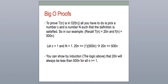Now let's talk about Big O proofs. Let's start with something simple. To prove t of n is in Big O of f of n, all you have to do is pick a number c and a number capital N such that the definition is satisfied. In our example, capital T of n is equal to 20n and f of n is equal to 500n. Let's let c equal 1 and capital N equal 1. Then we get: 20n is less than or equal to 1 times 500n. This follows that 20n is less than or equal to 500n. You can show by induction or logic that 20n will always be less than 500n for all n greater than or equal to 1. That satisfies the definition, so t of n is indeed in Big O of f of n.